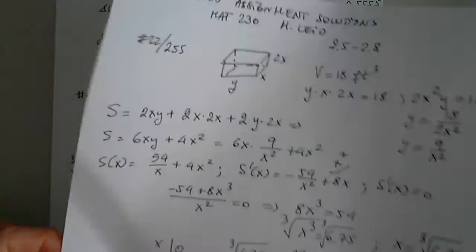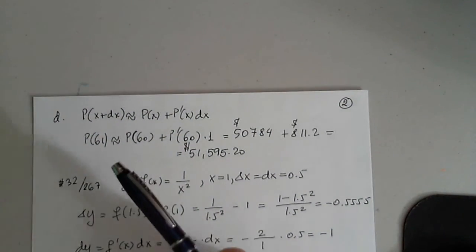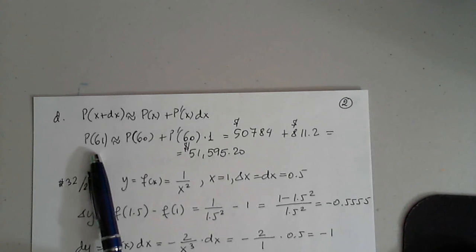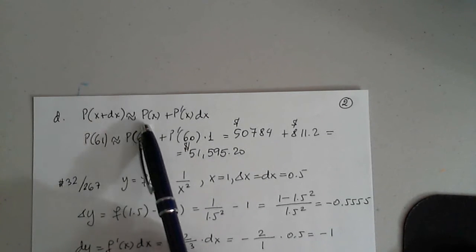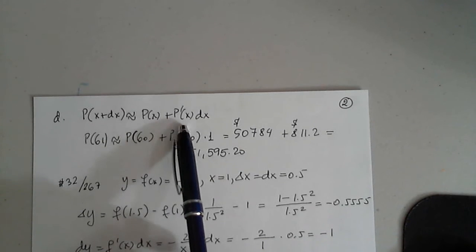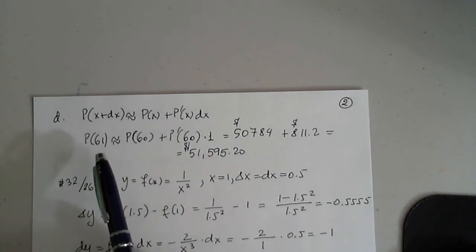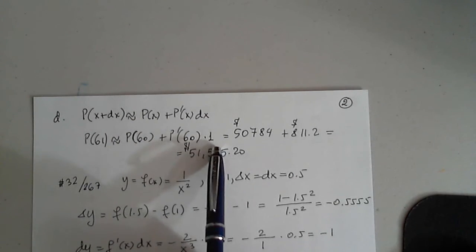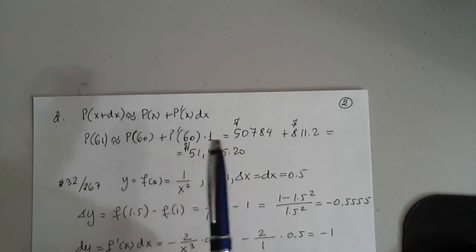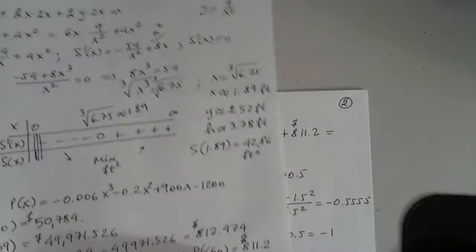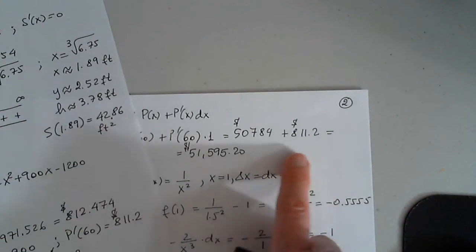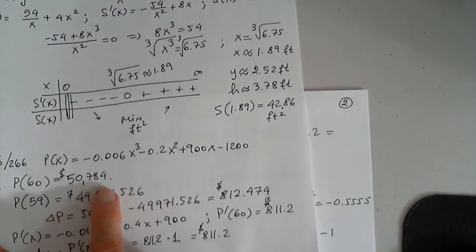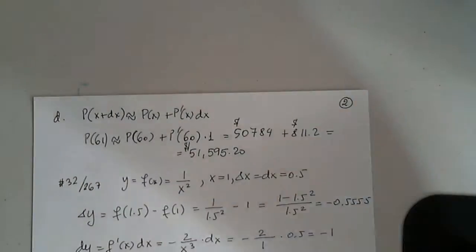So we get that. Then we were asked to use differentials to determine what will be the increase in the profit when we manufacture 61. This is the same thing with the formula. p of x plus dx is approximately p of x plus p prime times dx. And this is p of 61, 60 plus 1. This is 60, this is 60, and this is 1. So p of 60 I copied from the previous page. And p prime of 60 is this 812 plus 0.2. And this is what we get when we add those two. And the 50,784 from the previous page.